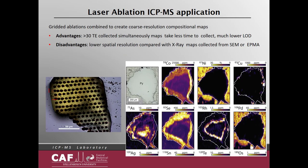Another useful application is gridded ablations where the data is combined to create coarse resolution compositional maps. You have your sample grain and the raster of points is continuously ablated over the sample surface. The data is then stitched together and for individual elements a compositional map can be created. Its advantage is the simultaneous collection of more than 30 trace elements over a short period of time, typically less than an hour, at a lower level of detection than can be obtained with SEM analysis. The disadvantage is the lower resolution of these combined image maps than would be obtained from SEM or electron microprobe analysis.